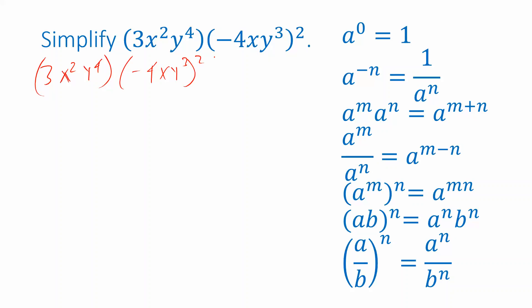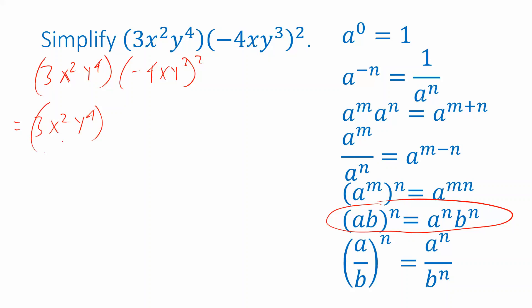Just like in the previous problem, I see things multiplied together inside parentheses and an exponent outside the parentheses, so I want to distribute that exponent. This property makes it look like you're only able to distribute when you have two factors inside parentheses, but in fact you can distribute it to 3 or 4 or however many factors are inside as long as they're all multiplied together. So I'll leave the first quantity alone for now, and rewrite the second quantity as negative 4 squared, x squared, y cubed squared.